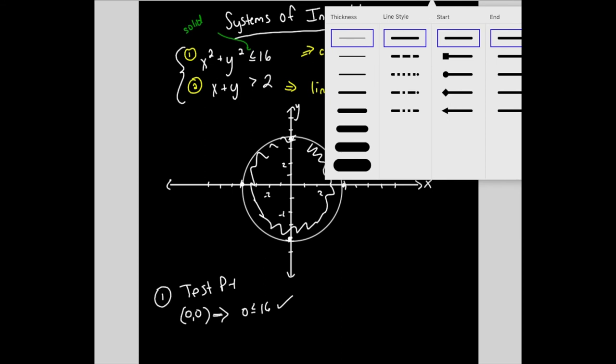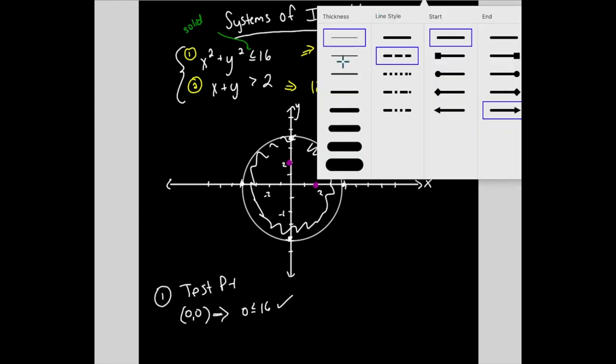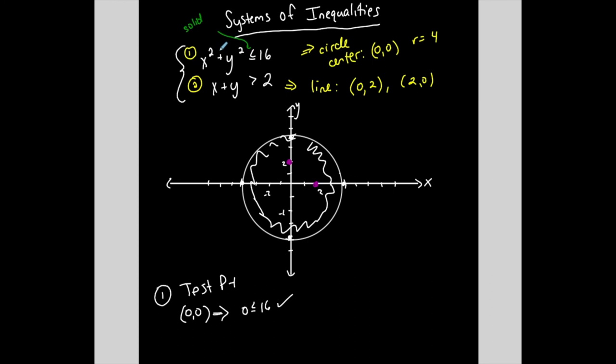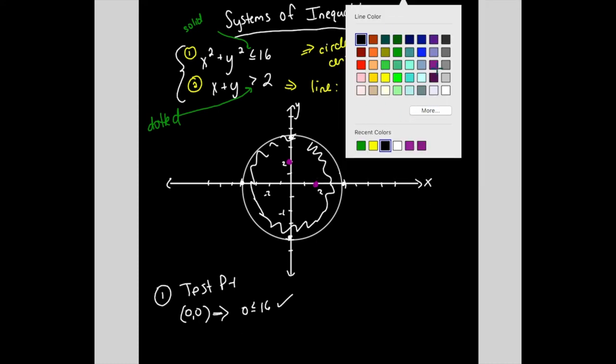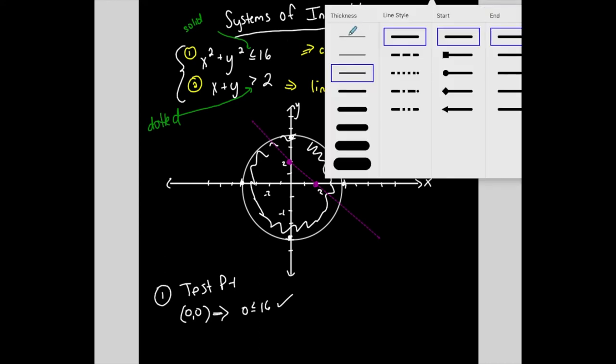Let me do the next one, which looks like a line. That's easy because I have the two points: 0, 2 is one point and 2, 0 is the other one. Before I connect these points, I want to ask how do I connect these points? Is it going to be a solid line or is it going to be dotted? I want to know if I'm including the values on the line or not. In this case, it's greater than but not equal to, so this is going to be a dotted line. Dotted line. Fancy.